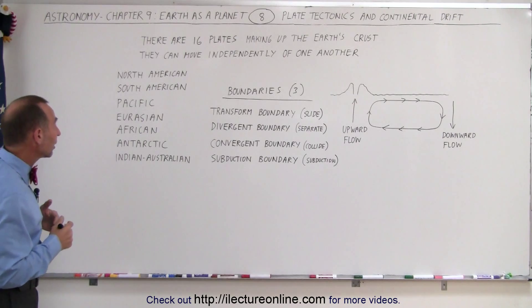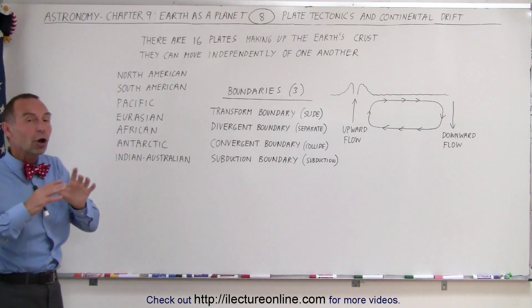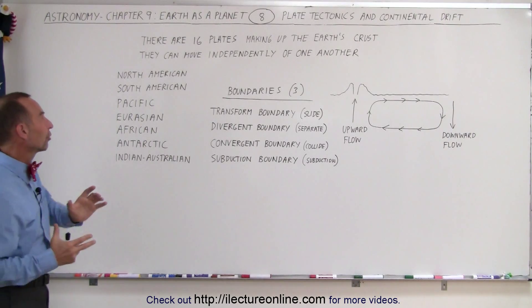First of all, let's take a look at some of the most important ones. We have two, four, six, seven very large plates covering most of the Earth's surface.